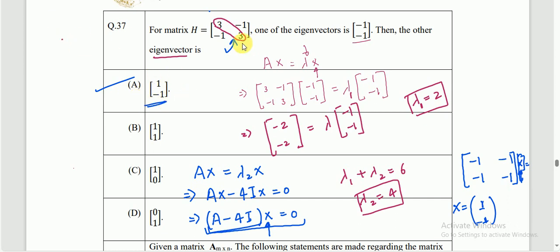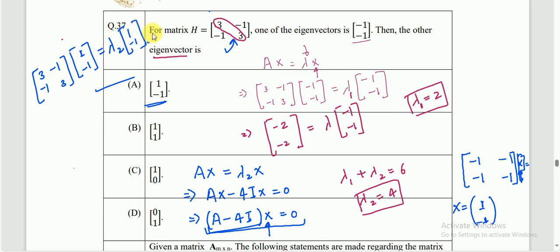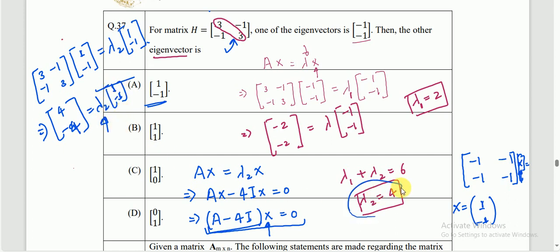To verify, we can cross-check by multiplying H times [1, -1]. We get [3-1, ...] = [4, -4], which equals 4 × [1, -1] = λ₂ × [1, -1]. This confirms λ₂ = 4 and the eigenvector [1, -1] is correct. So the answer is option A.